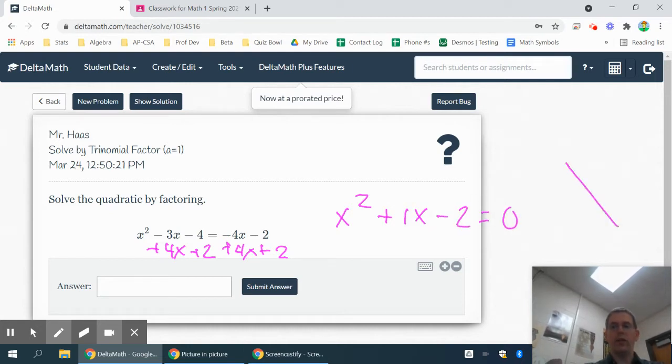At this point I try to factor by multiplying to the last number, negative 2, adding to the middle number 1. So that means I believe my numbers are going to be 2 and 1, and since I'm adding to a positive my larger number is going to have to be positive. So 2 minus 1 would be 1 but multiplying a positive and a negative would give me a negative.